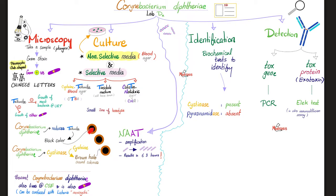The colonies appear in the center. Corynebacterium diphtheriae also has cysteinase, which is an enzyme that converts cysteine into a brown halo around the black colonies. So when you see black colonies surrounded by a brown halo, this is Corynebacterium diphtheriae. The medium is called cysteine tellurite blood agar, or CTBA.